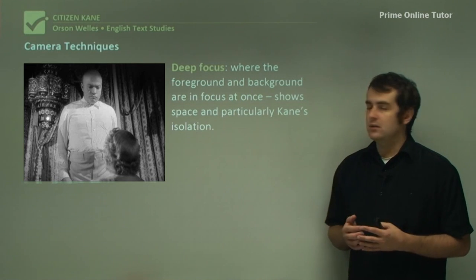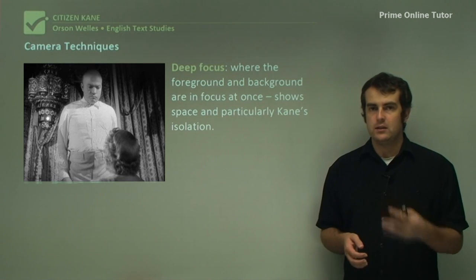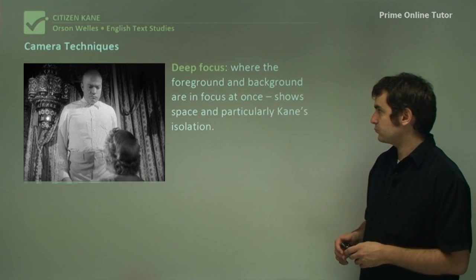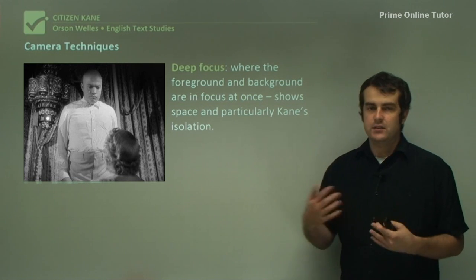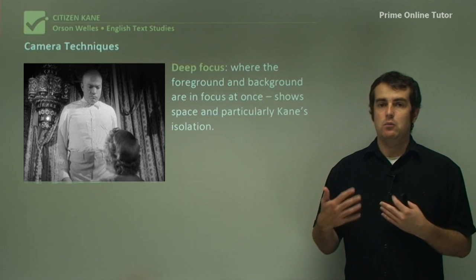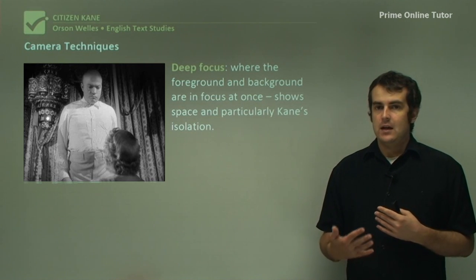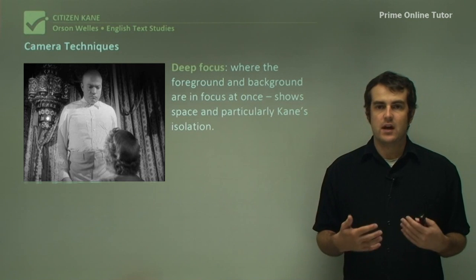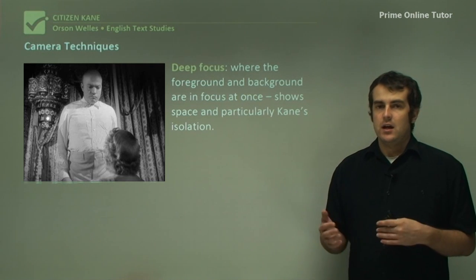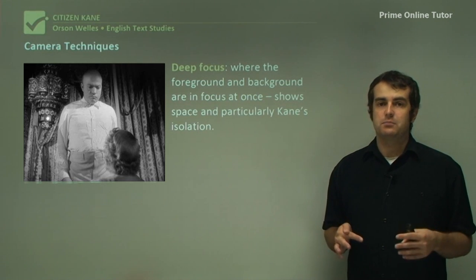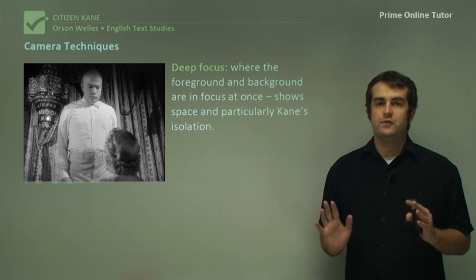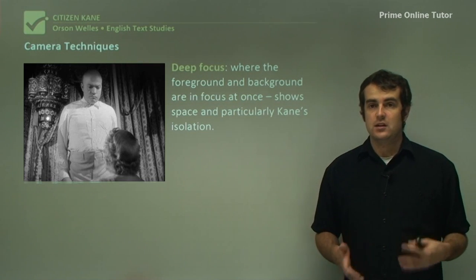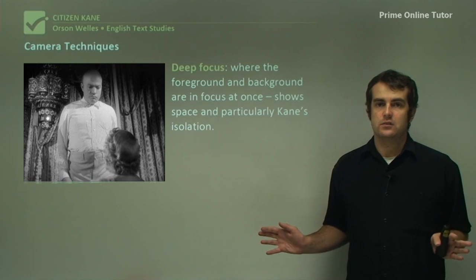The most important technique this film pioneered — or at least the first time it was used in a major film — was deep focus, where the foreground and background were in focus at the same time. This helped to show space and particularly the isolation of Kane. It required a lot of effort to put together. Normally when you film something, you have the foreground in focus and the background out of focus.